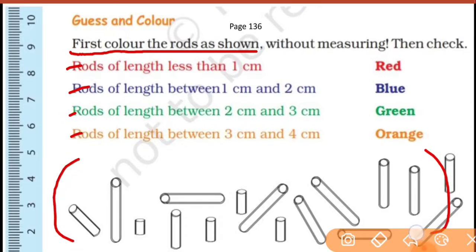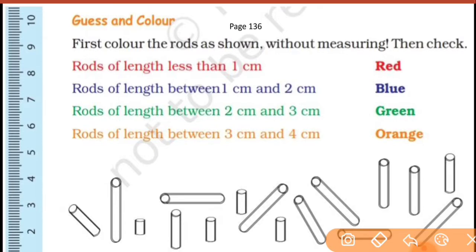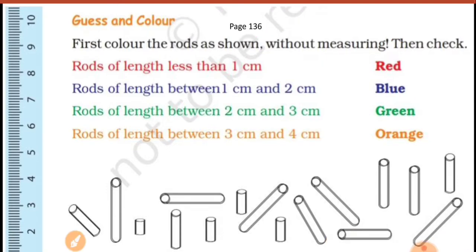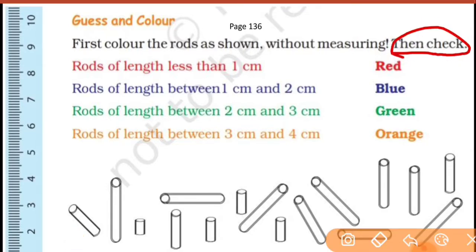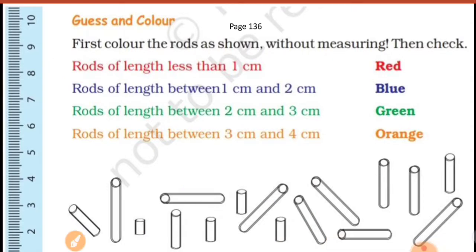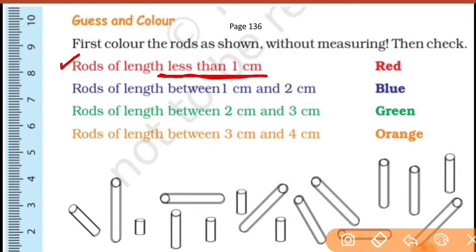You can color without measuring, and then you will check your answer. You will do this yourself. Let's see what to do. First, number one: you can see rods. These are rods, and you have rods of length less than one centimeter. So first is rods of length less than one centimeter.